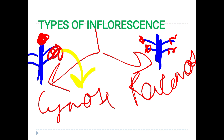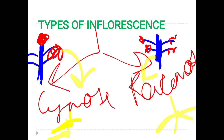If the main axis bears the flower at its apex, that is called cymose. If the main axis doesn't bear the flower at its apex, then it is known as racemose. Both cymose and racemose are further divided into subtypes which we will study in later slides.